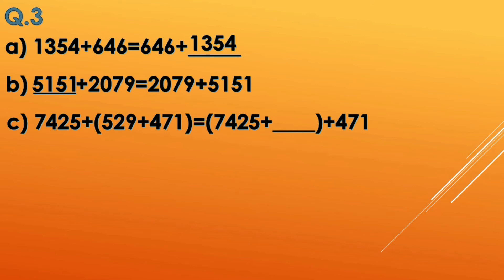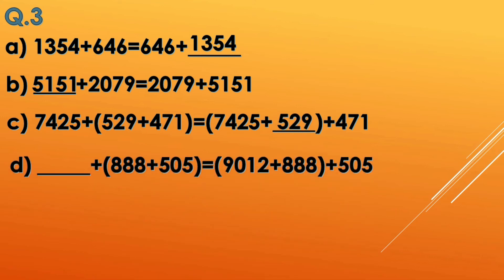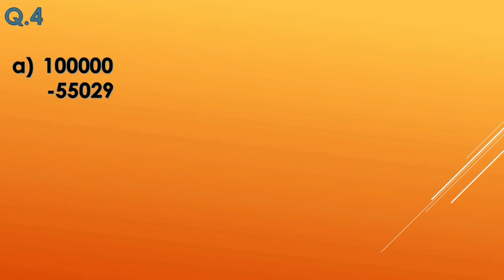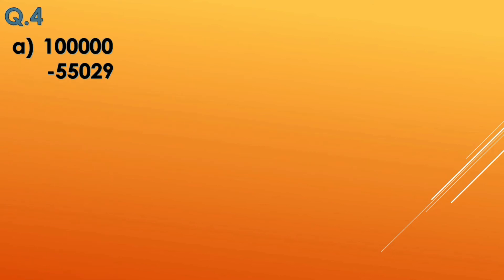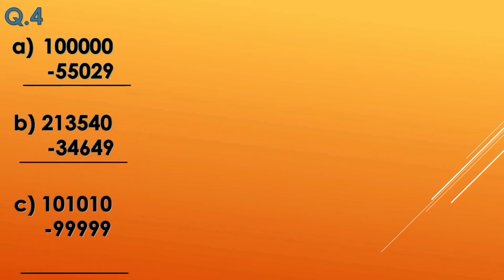In option c, they are changing the group — this is associative property — so the fill-in-the-blank answer is 529. In option d, it is also associative property with the group being changed, so the correct answer is 9012.